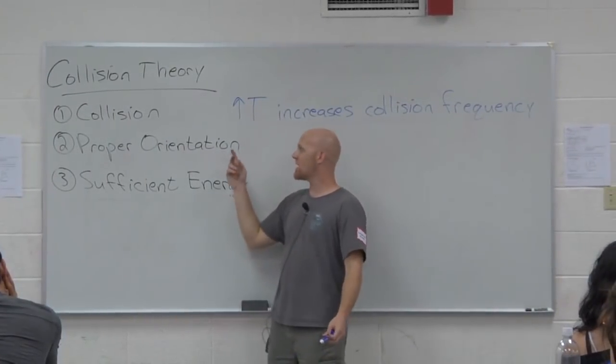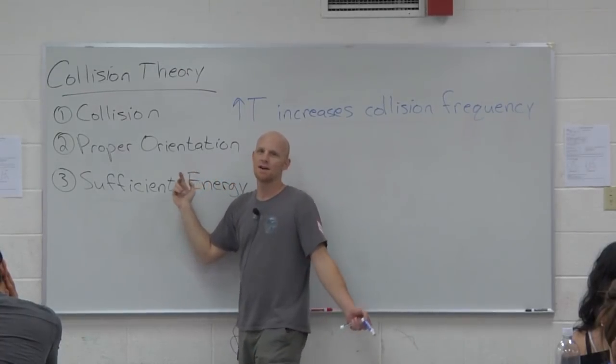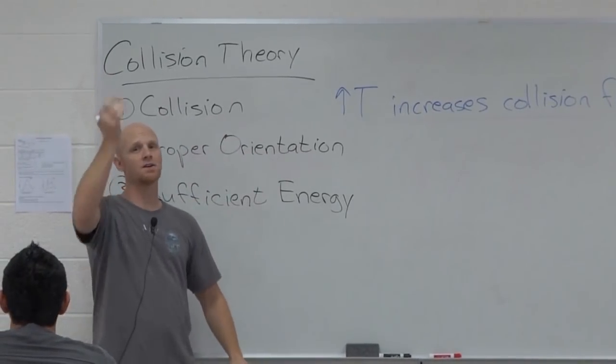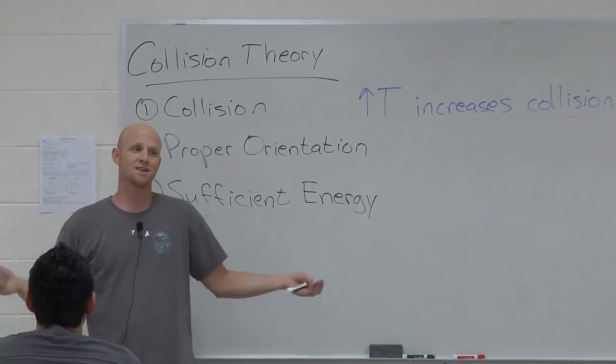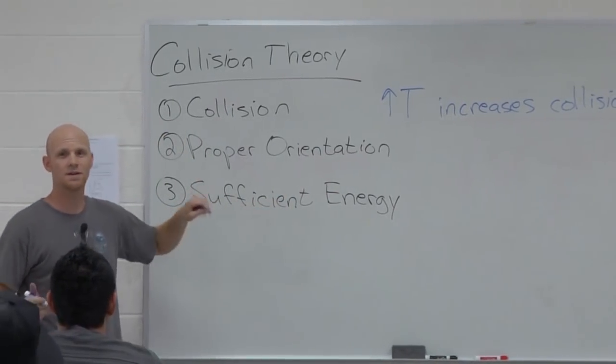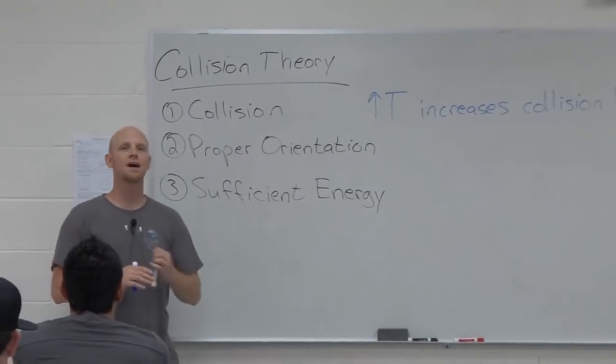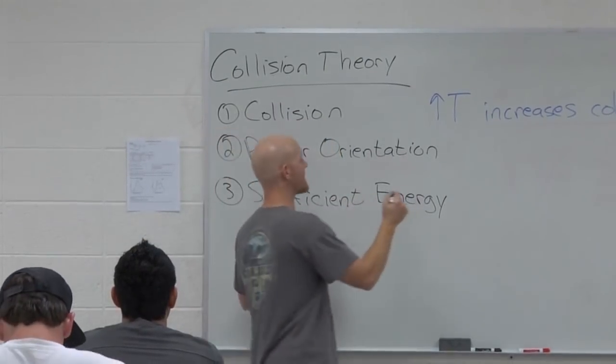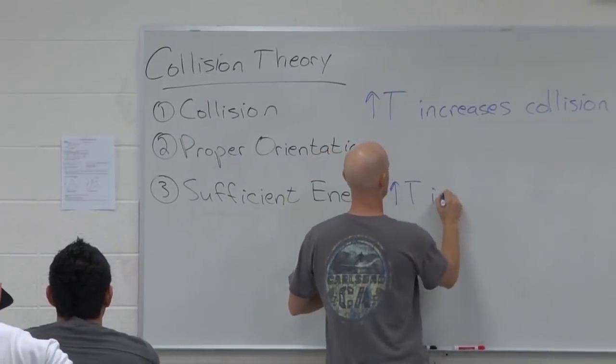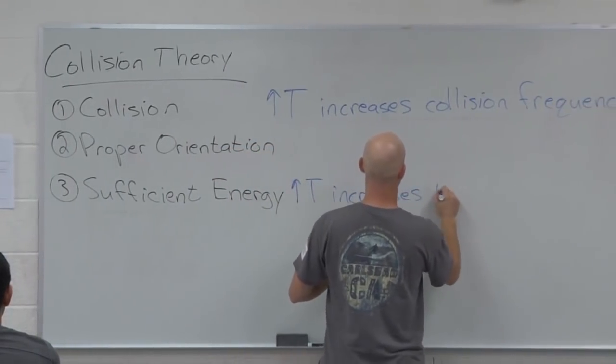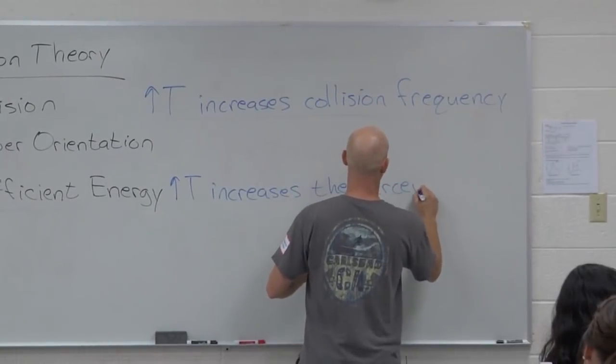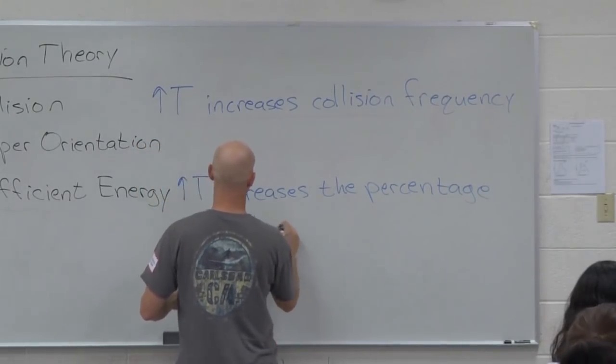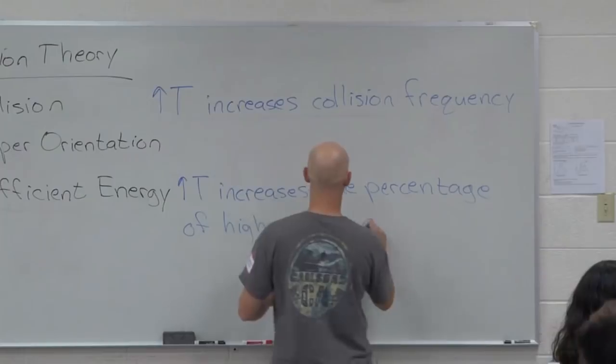It turns out raising the temperature is not going to do anything for you as far as the proper orientation. If one out of every 10 collisions at a lower temperature has the right orientation, then even at a higher temperature, only one out of every 10 collisions would have the right orientation. That doesn't change. But it will change this last one. Because notice, not only are molecules going to collide more frequently, but now that they're moving faster, when they collide, they're going to have more energy on average as well. So we say that an increase in temperature increases the percentage of high energy collisions.